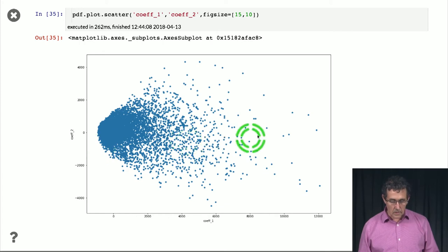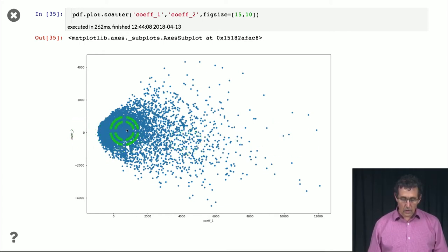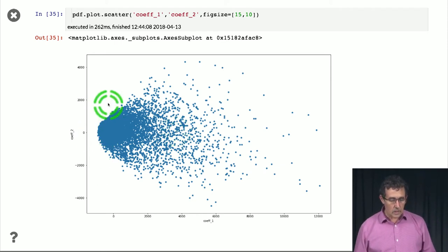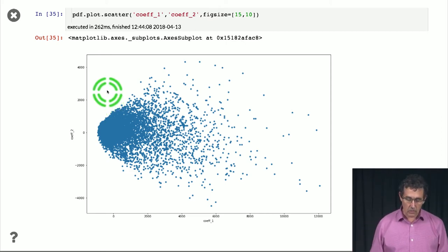This is coefficient one, that is essentially the amount of snow. And this is coefficient two, which is whether the season is late or early. So what you see is that there is this boundary that goes more or less like this.